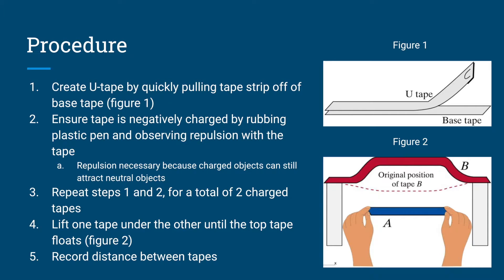Repulsion is necessary because attraction can still occur between a charged and neutral object. Repeat steps 1 and 2, creating two total U-tapes. Then, lift one tape under the other until the top tape floats, shown in figure 2. Finally, record the distance between the tapes for later analysis.